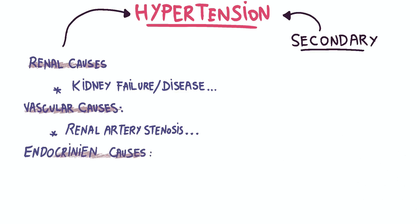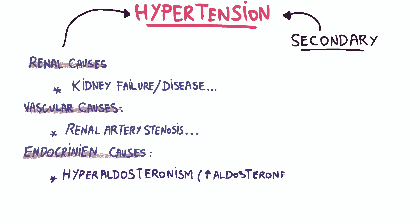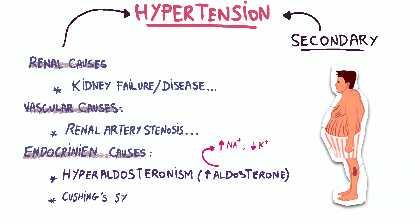Endocrine causes include primary hyperaldosteronism, which involves excessive production of the aldosterone hormone, leading to sodium retention and low potassium levels, contributing to elevated blood pressure, as well as Cushing's syndrome, which is characterized by excessive cortisol production.